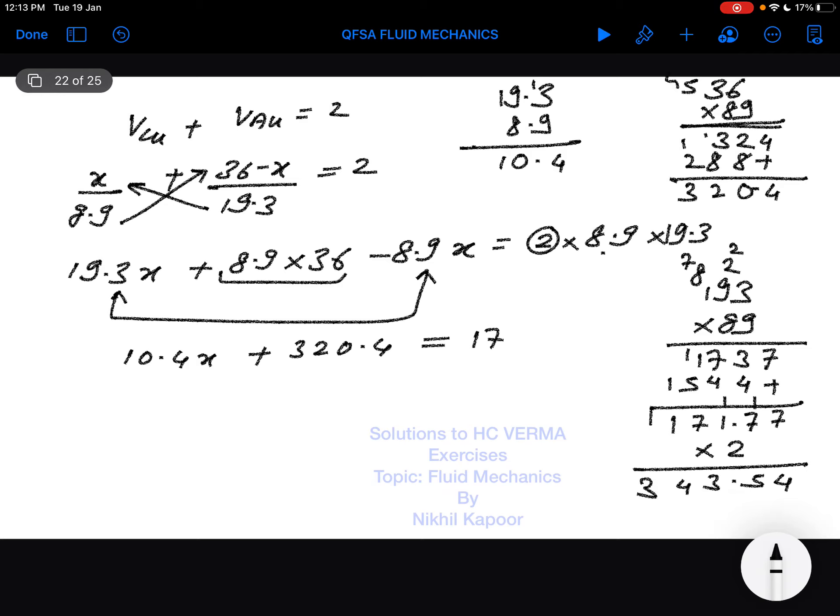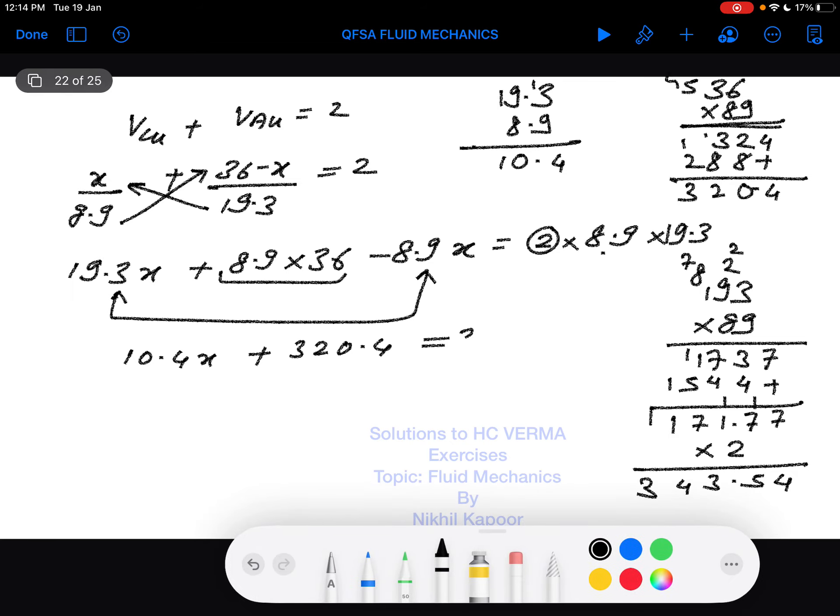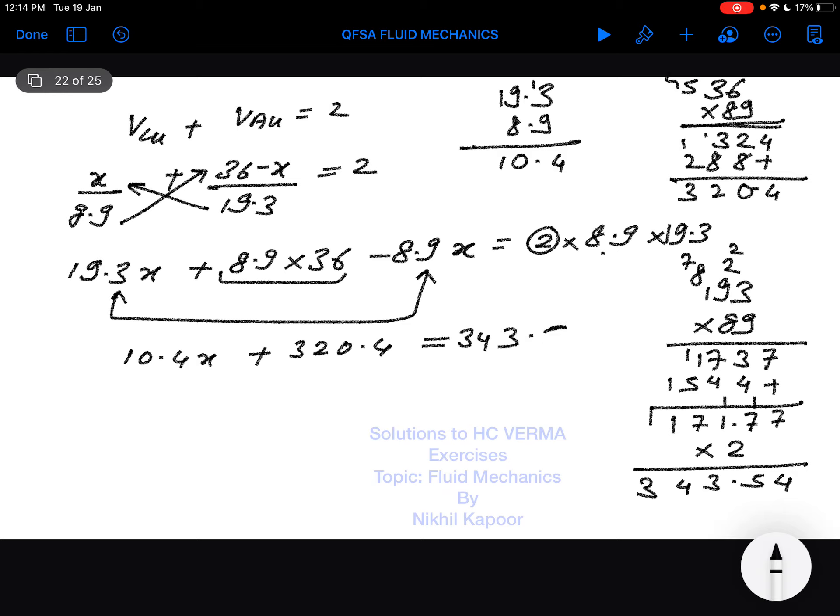So 10.4x equals 343.54 minus 320.4. Doing this subtraction, 343.54 minus 320.4 equals 23.14. Therefore, 10.4x equals 23.14, and x equals 23.14 divided by 10.4.